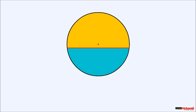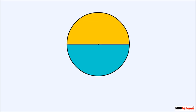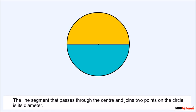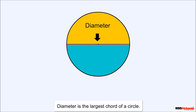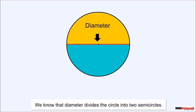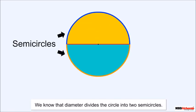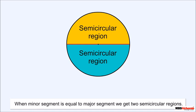Till the center, the length of the chord increases, and after crossing the center it starts decreasing. So it is largest when it passes through the center. The line segment that passes through the center and joins two points on the circle is the diameter — therefore, a diameter is the largest chord of a circle. Since the diameter divides the circle into two equal parts, when the minor segment equals the major segment we get two semicircular regions.